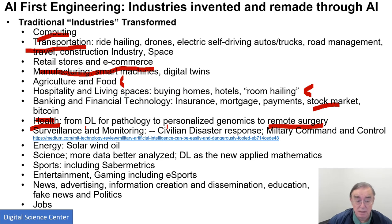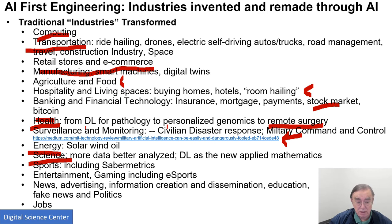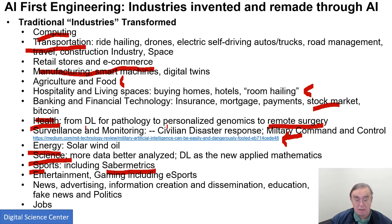We have the area of surveillance and monitoring, which includes military applications and civilian disaster response. Energy is transforming as we strive for a greener future with solar and wind. Science has always been based on data, and that data can now be better analyzed with deep learning and other machine learning capabilities. Sports: there's the field called sabermetrics, the study of baseball statistics, which can now be dramatically enhanced — including analysis of videos and looking at the performance of particular players against each other — to do a much more sophisticated job of finding the best matchups to maximize your chance of winning a game.